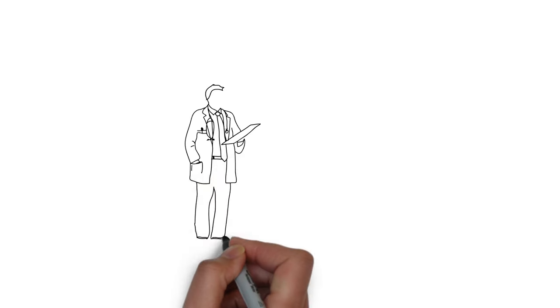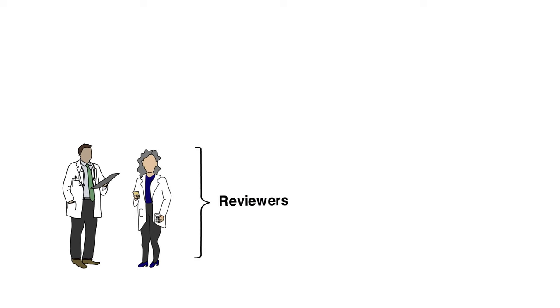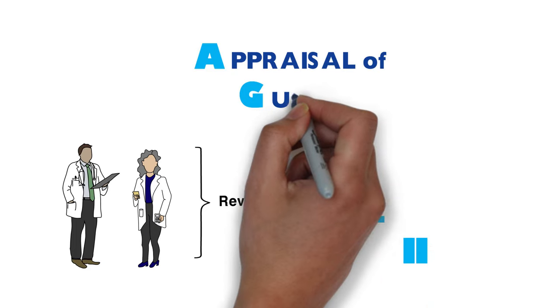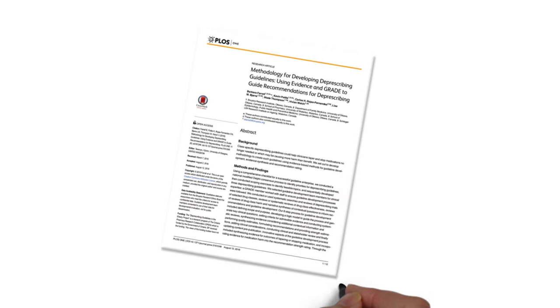Next, each guideline was reviewed by independent health care providers and then by organizations that might consider endorsing the guideline. All reviewers used a method called AGREE 2, which stands for the Appraisal of Guidelines for Research and Evaluation. This method allowed reviewers to evaluate the process of guideline development and the quality of the reporting. A full description of our deprescribing guidelines methods are published online in the journal PLOS One.